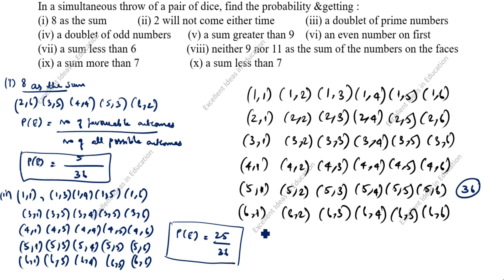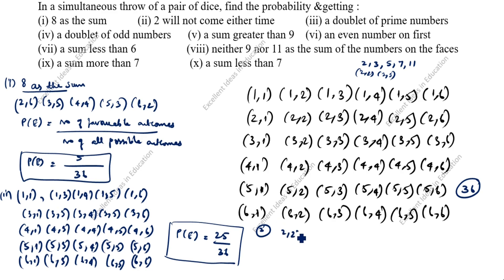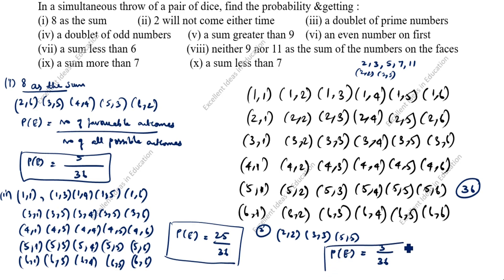Third question: a doublet of prime numbers. A doublet means the same number appears on both dice. The prime numbers up to 6 are 2, 3, and 5. So the favorable doublets are (2,2), (3,3), and (5,5) — that is 3 outcomes. P(E) = number of favorable outcomes divided by number of all possible outcomes = 3/36.